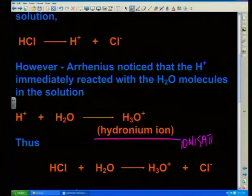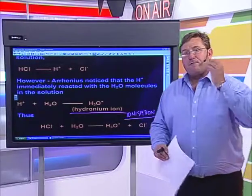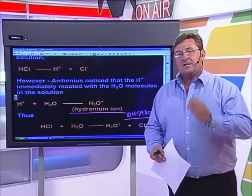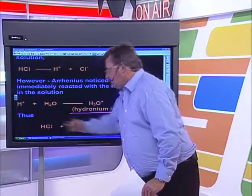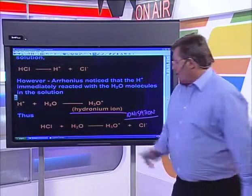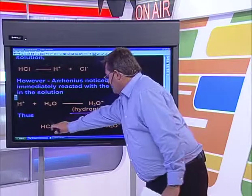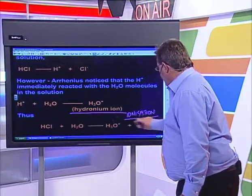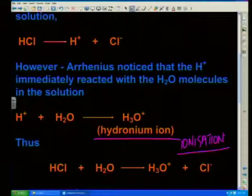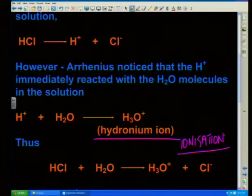We spoke about ionization - that's when a substance forms ions for the first time. We had a covalent substance HCl, which broke up to form two ions: the hydronium ion and the chloride ion. Therefore we call that process ionization.